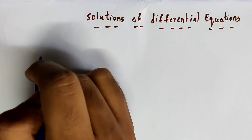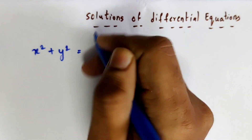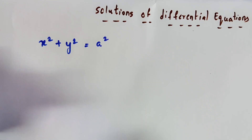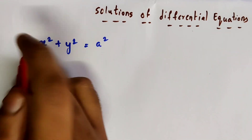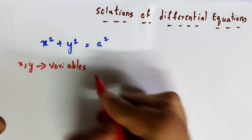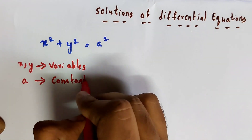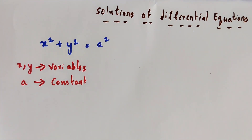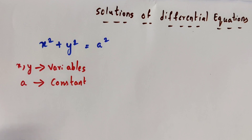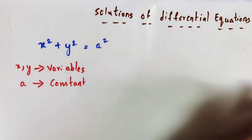I have one polynomial equation: x squared plus y squared equals a squared. Here, x and y are variables, and 'a' is a constant — it is an arbitrary constant. The value is the same constant in the solution. Now we will form a differential equation for this equation.